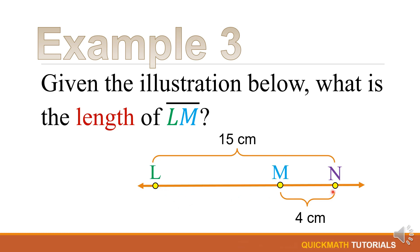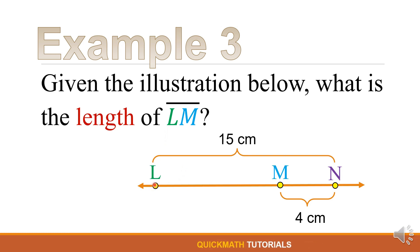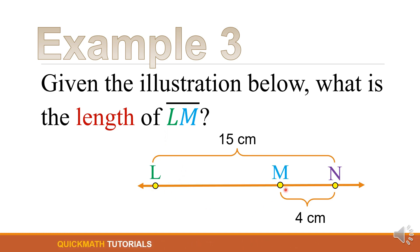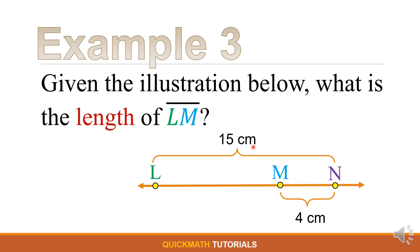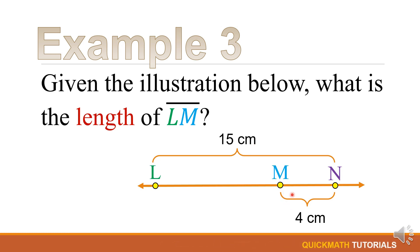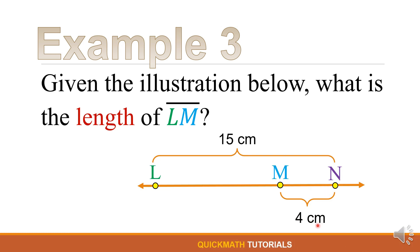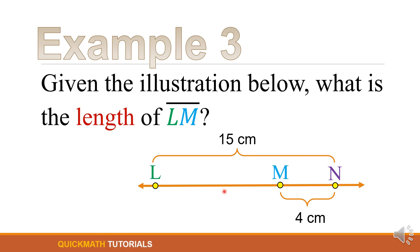For our last example, we have points L, M, and N. We are given the length of line segment LN which is equal to 15 cm and the measure of line segment MN which is equal to 4 cm. This time we will find the length of line segment LM.